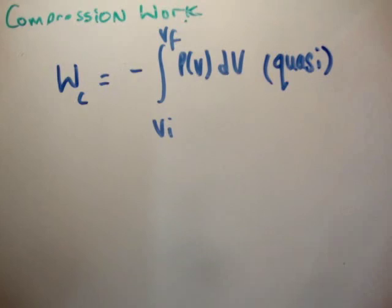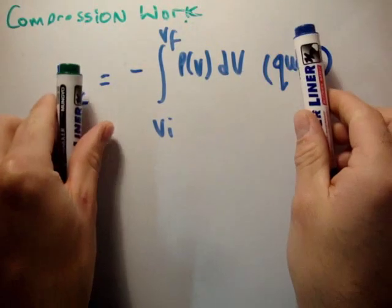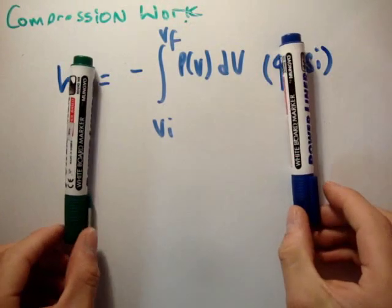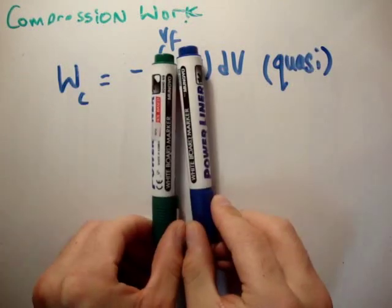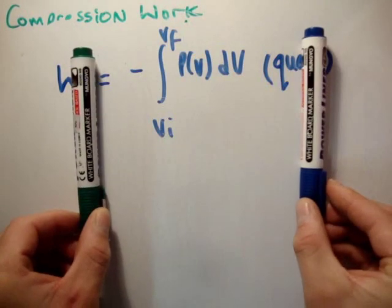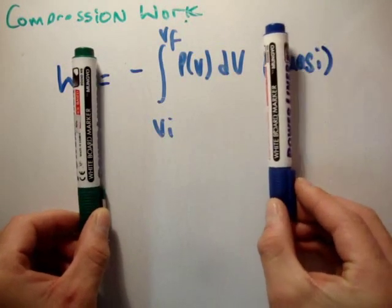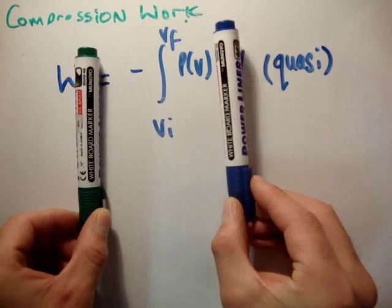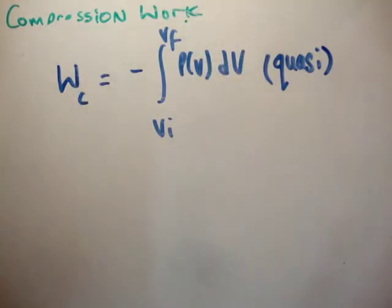That's how we redefine our expression for compression work. The work done in a quasi-static compression is equal to minus the integral of P as a function of volume dV going from V-initial to V-final. We're going in small infinitesimal steps so that the system is in thermal equilibrium throughout.